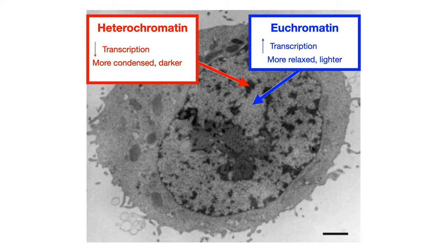Within the nucleus, we have something called the nucleolus — the center of the center. The nucleus is the command center of the cell, and the nucleolus is the command center within the nucleus. In the nucleolus, we have rRNA synthesis and ribosomal assembly. Just remember the letter R for rRNA and ribosomes — that's really all you need to know.